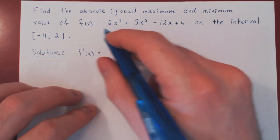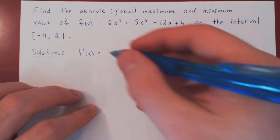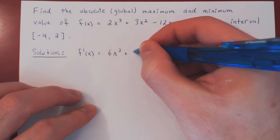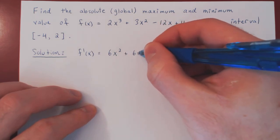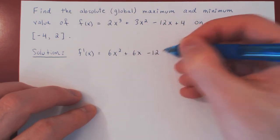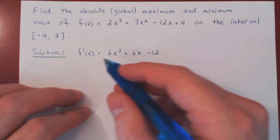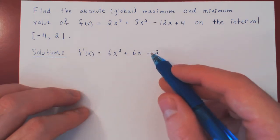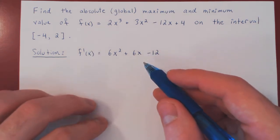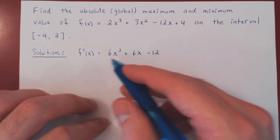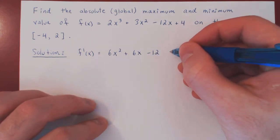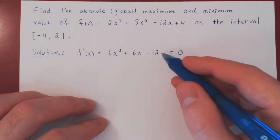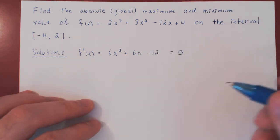F being a polynomial, we simply use the power rule, so we'll get 6x squared plus 6x minus 12. Clearly, the derivative being once again a polynomial is always defined, so we have to look for values of x that make the derivative equal to 0. We have a polynomial, so we can find the zeros by factoring.